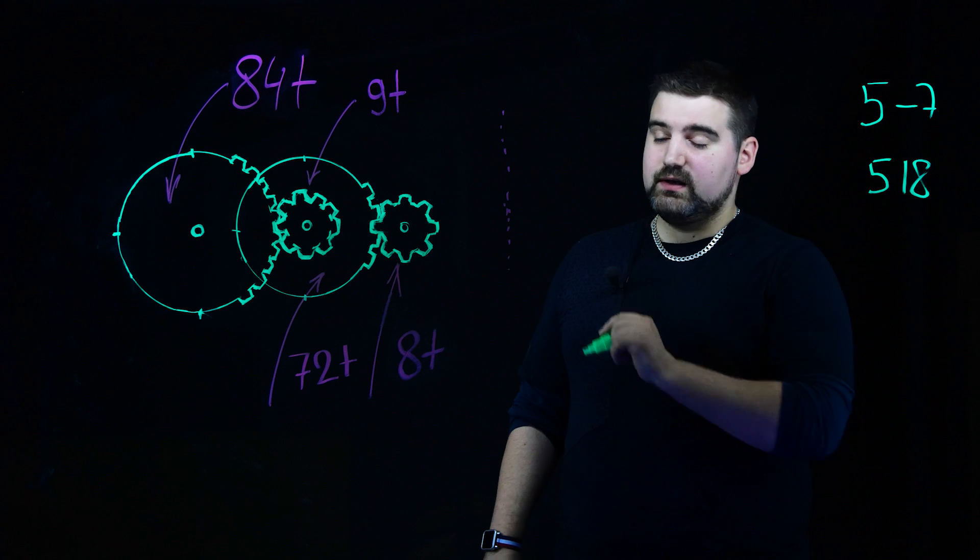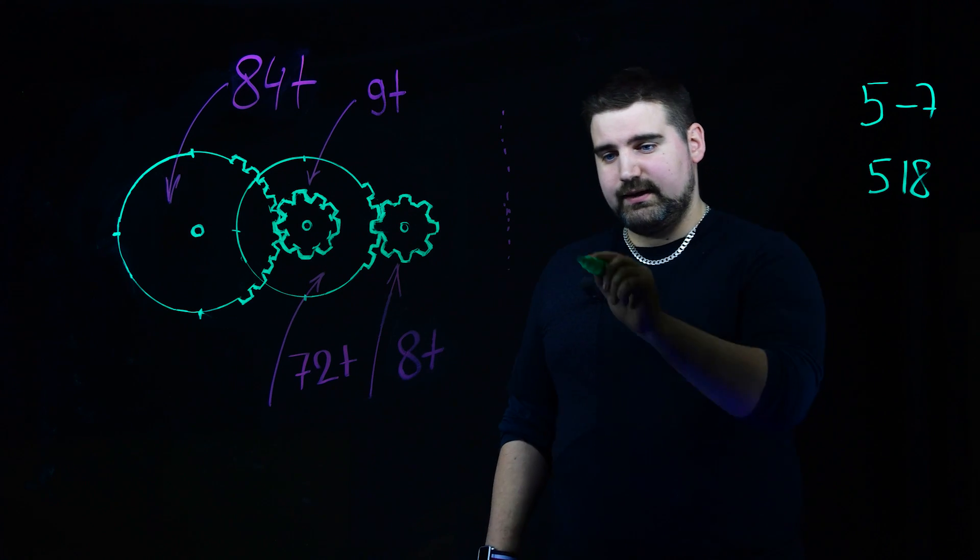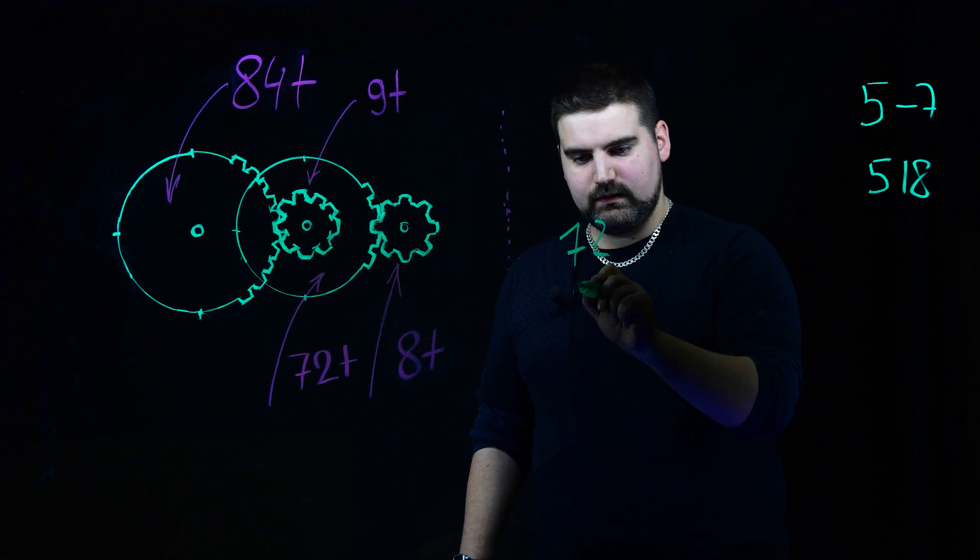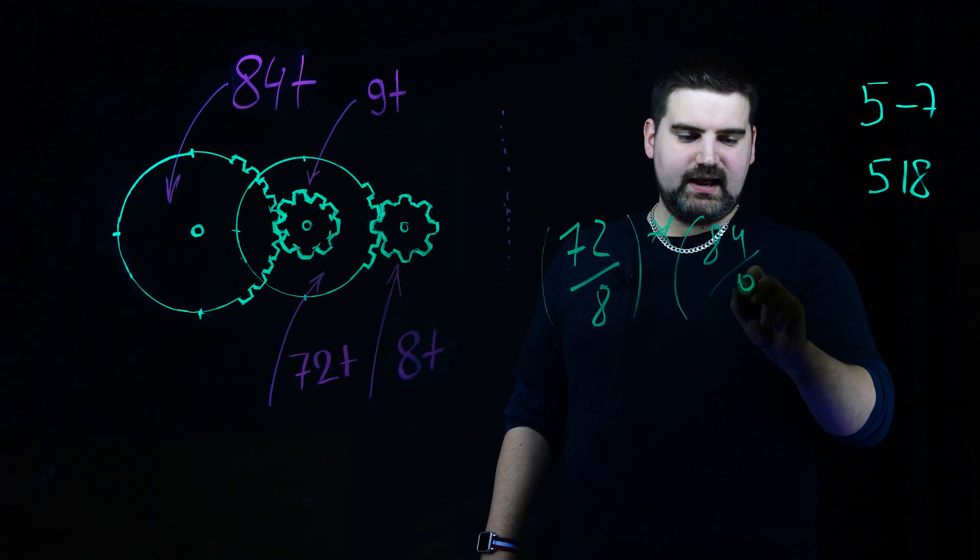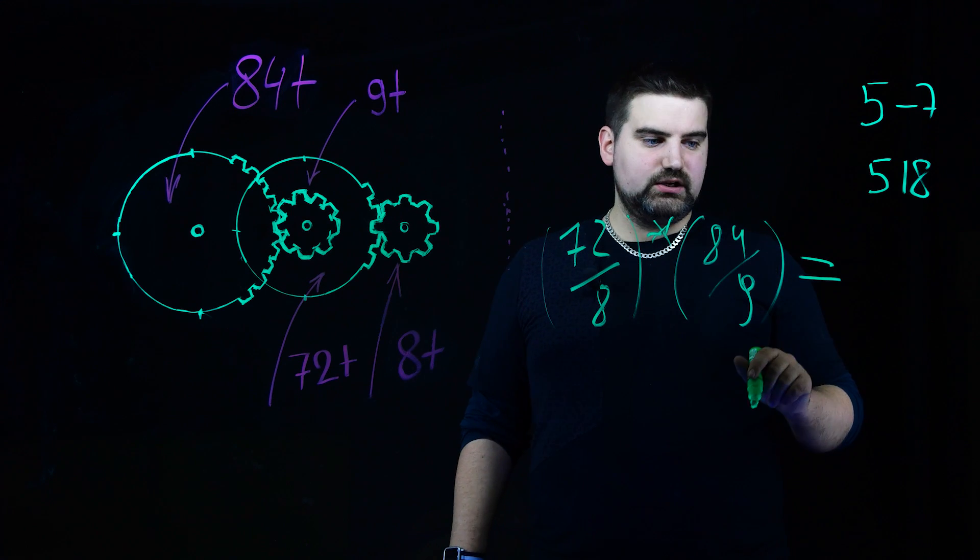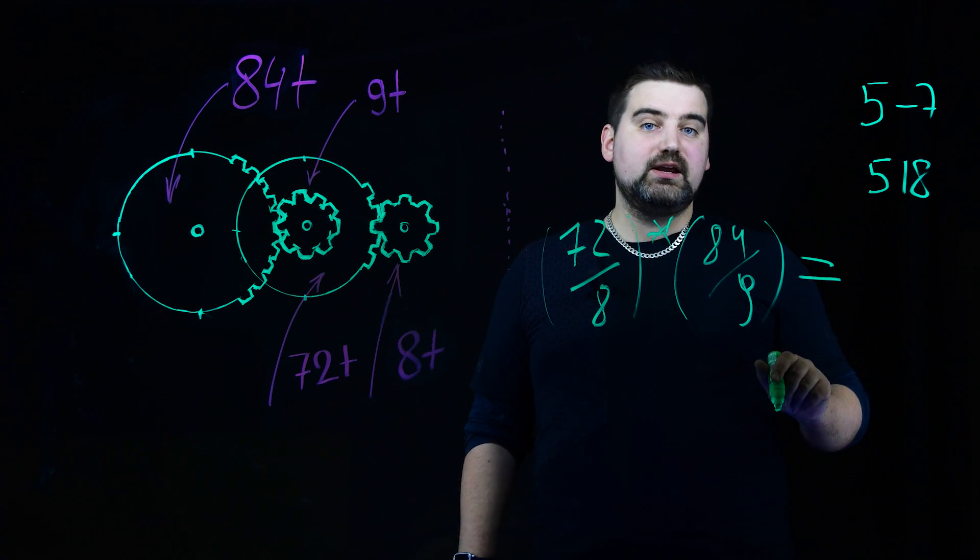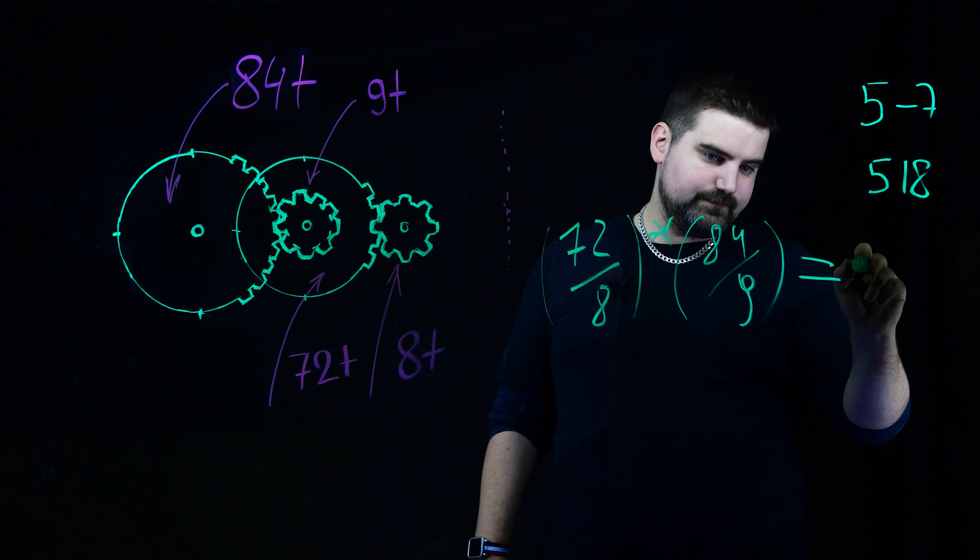The reduction gear has two gear pairs. Those are 72 to 8 teeth and 84 to 9 teeth. I calculate the relation and see the RPM ratio reduction. It is 84.